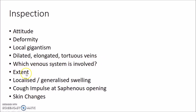You need to mention the extent of the varicose veins — that is, where they start, for example from the dorsum of the foot up to the thigh. You need to inspect whether it is a localized or generalized swelling; if it is a generalized swelling, it indicates deep vein thrombosis. You need to inspect for cough impulse at the saphenous opening, which is known as Morrissey's test.